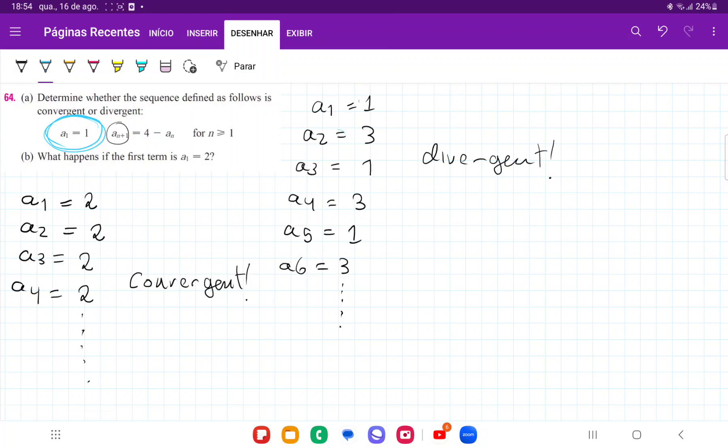And for a1 = 2, it's convergent because it stays stuck at 2. So definitely when we have a recurrent formula, the starting term really matters because it defines how the sequence is going to behave.